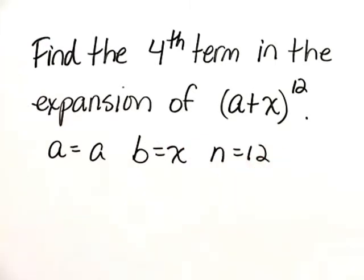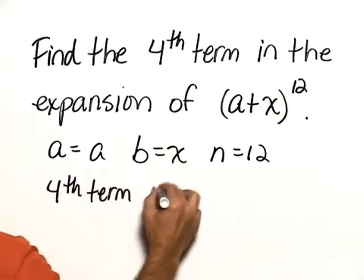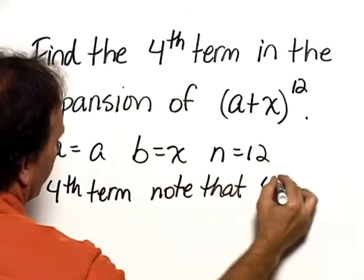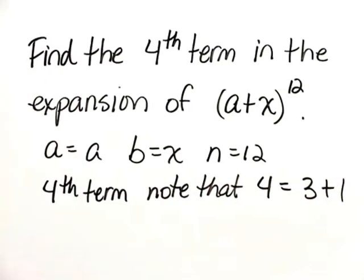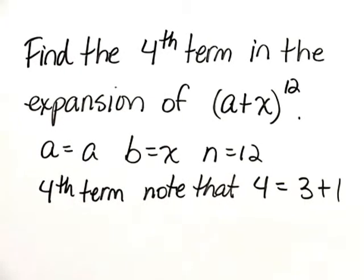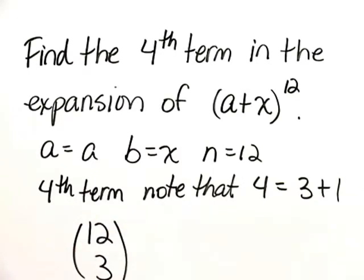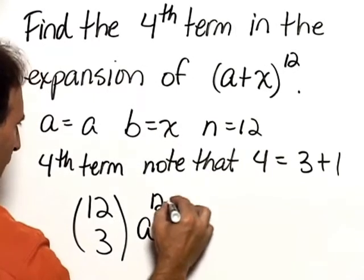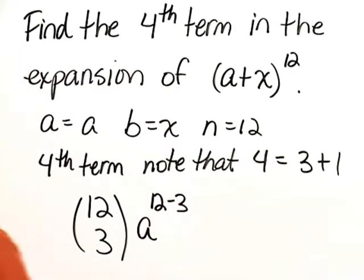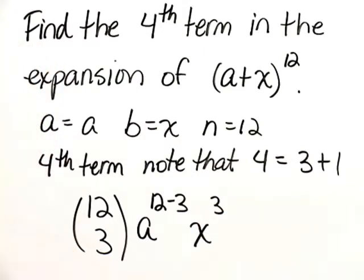And now since we want the fourth term, note that 4 would be equal to 3 plus 1, and then that allows us to write it as n is 12, choose 3, that will be our coefficient, and then it's a raised to the 12 minus 3 times b, which in this case is x, raised to the power of 3.